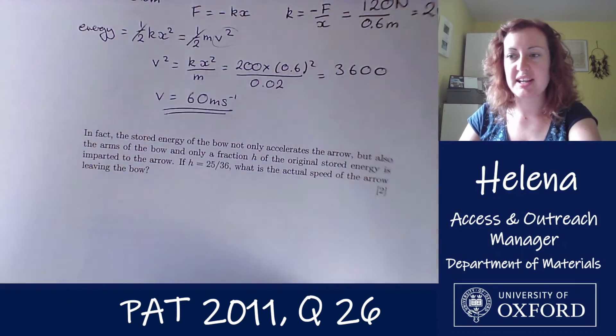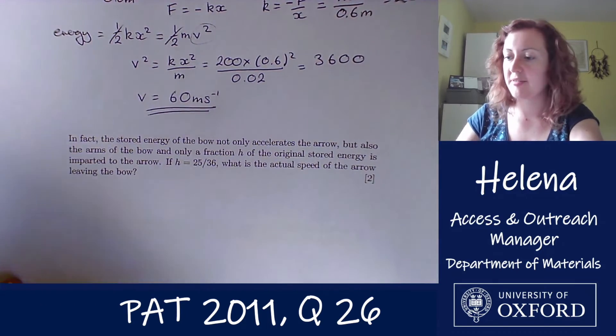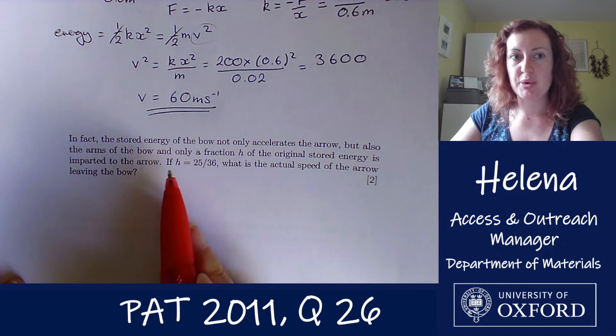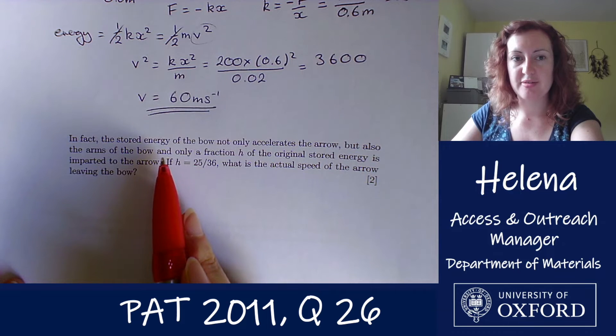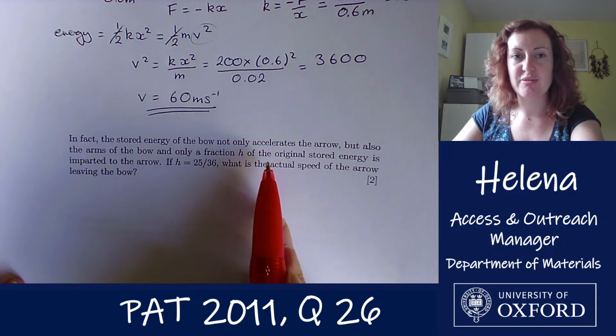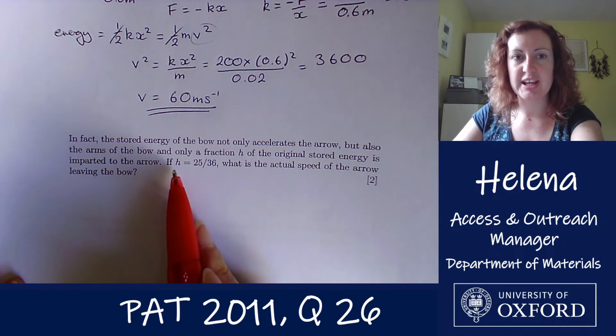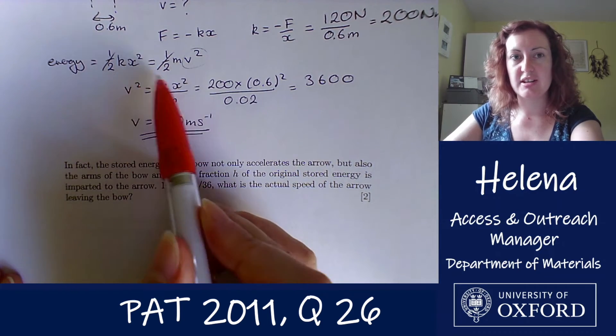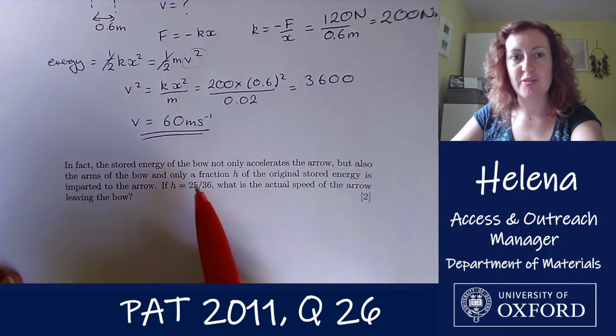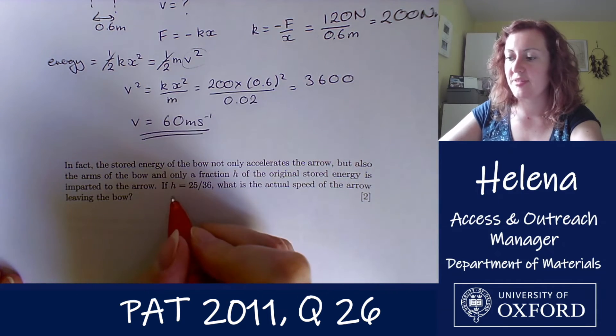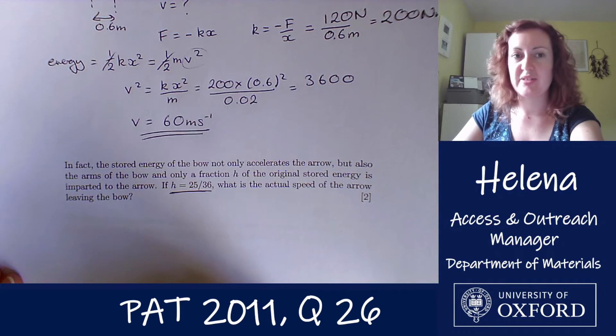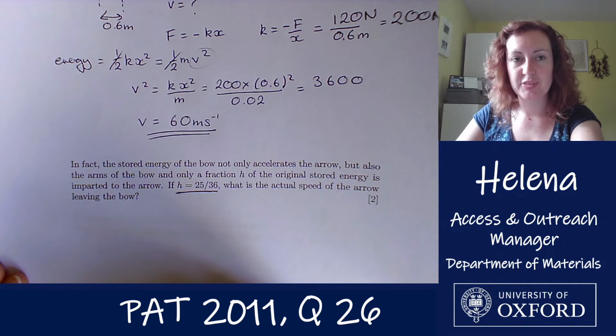Moving on to the second part, we are told that in fact, the stored energy of the bow not only accelerates the arrow, but also the arms of the bow itself. So only a fraction h of the original stored energy is imparted to the arrow. So rather than having all of the stored energy being converted to kinetic energy, we only have a fraction of it this time. So if that fraction is 25 over 36, what is the actual speed of the arrow leaving the bow?